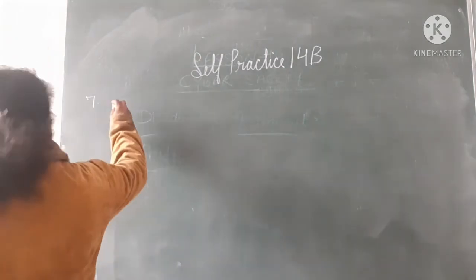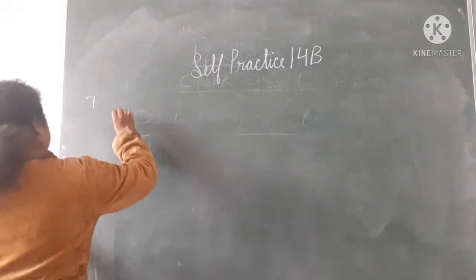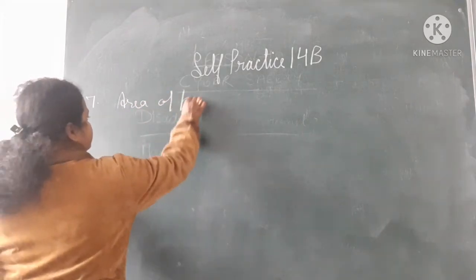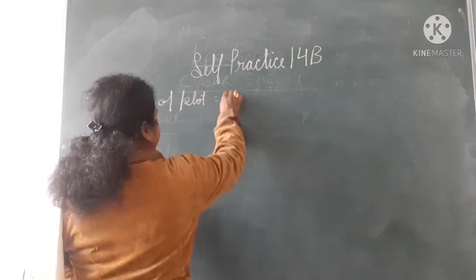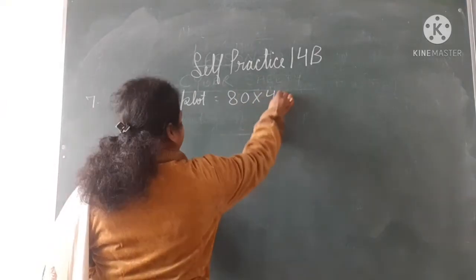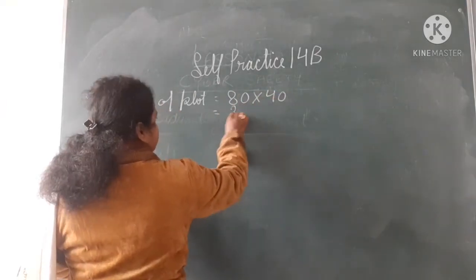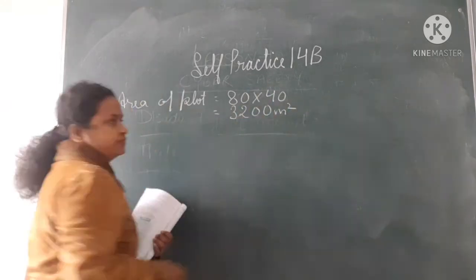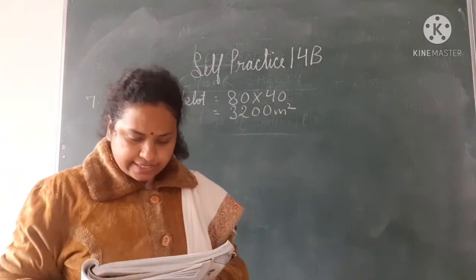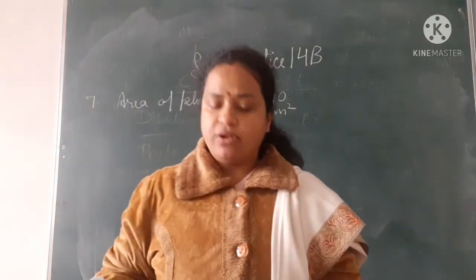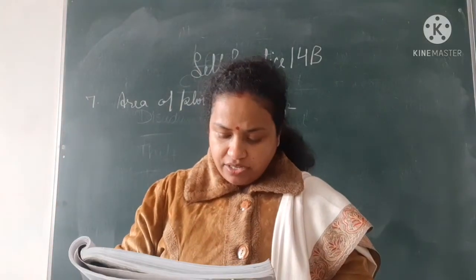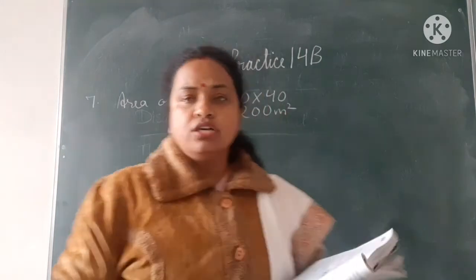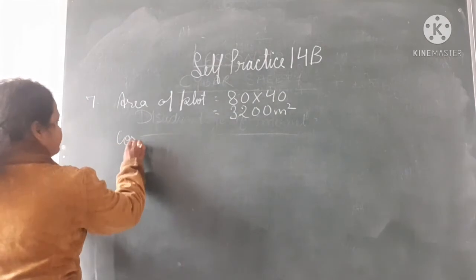First we will find the area of the plot. 80 by 40 means 80 into 40, that is equal to 3,200 metre square. This is the area of the plot. Now what you have to find? Cost of the plot.